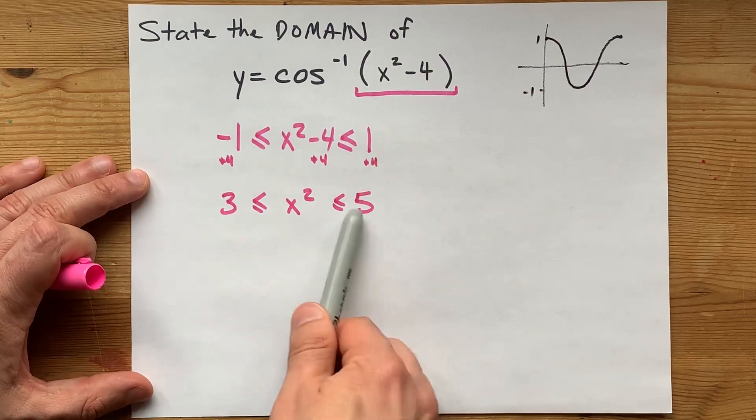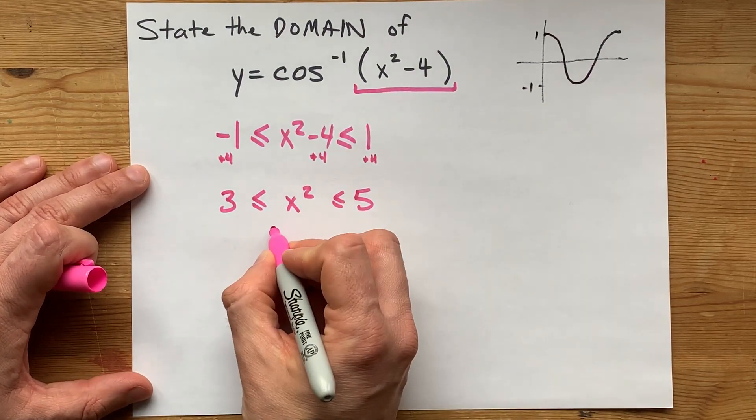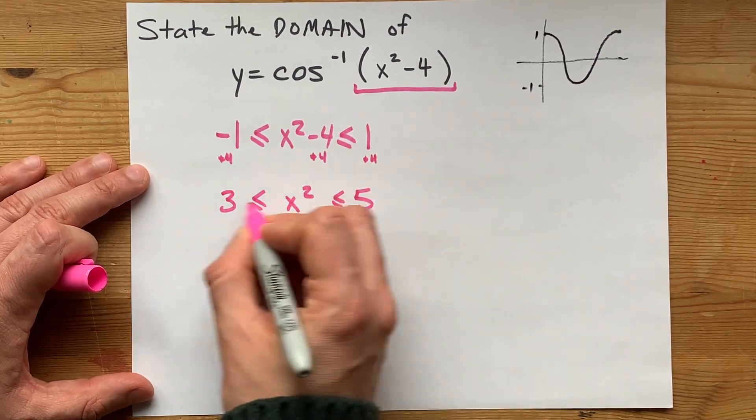And then, because these are both positive numbers, well, that's actually ideal. I just need a number squared to be between those two values.